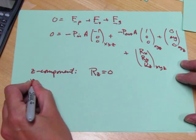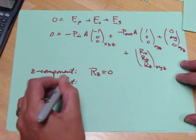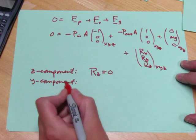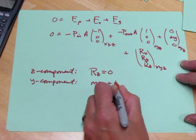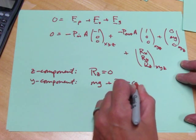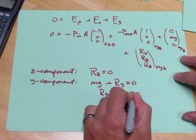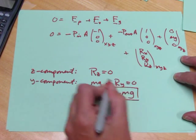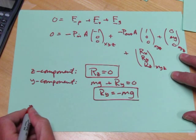If I look at the Y component, I see it's 0, plus 0, plus MG, plus RY equals 0, so RY equals minus MG. There must be a force that counteracts gravity to hold the tube up.